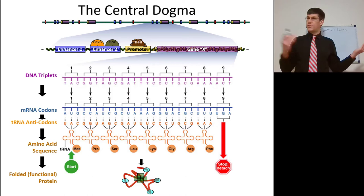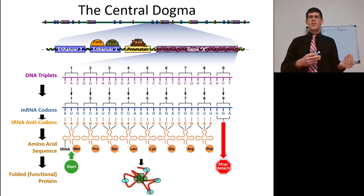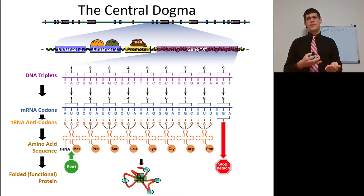A mutation in an enhancer can cause a gene to be expressed at the wrong place at the wrong time — for example, causing the hair gene to be expressed on your tongue, giving you a hairy tongue, or causing hair all over your body at birth. These kinds of mutations are just as important as a mutation in the gene itself, which might cause a change in the protein. We're going to focus on changes in the protein for most of this class because they're simply the easiest to explain.